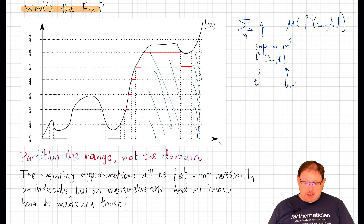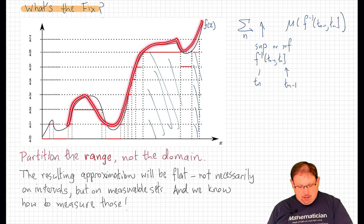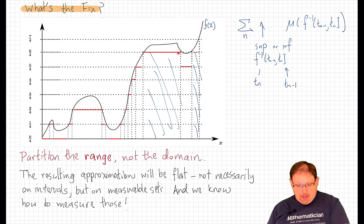is that what we're really doing here is we're taking an arbitrary measurable function and we're approximating it by simple functions, simple functions that are adapted to a partition of the range.